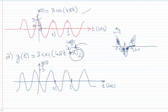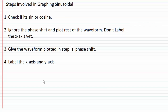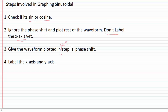That's the plot of y(t) = 3cos(4πt + π/2). Now let me list the steps involved in graphing sinusoidals. Step 1: check if you're plotting sine or cosine. Step 2: ignore the phase shift and plot the rest of the waveform — don't label the x-axis yet. Step 3: apply the phase shift to the plotted waveform, then label both the x-axis and y-axis.